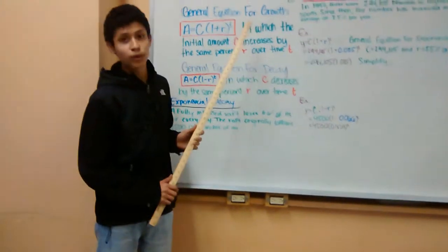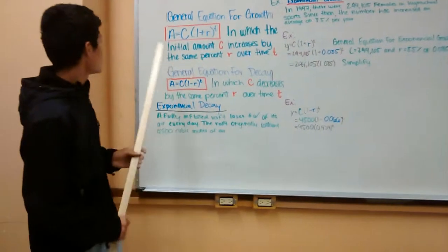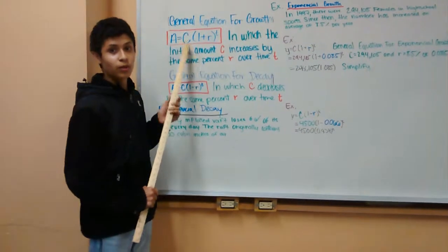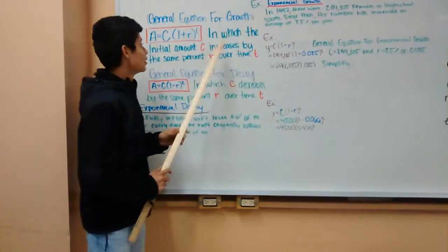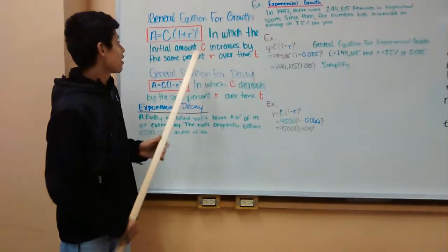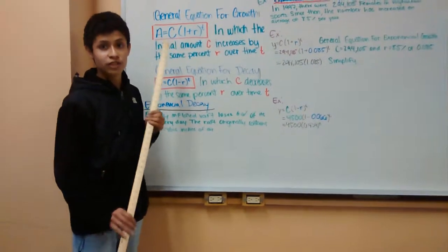So first we have the general equation for growth. The equation is A equals C times one plus r to the power of t, in which the initial amount C increases by the same percent r over time t.